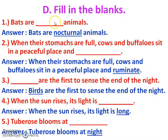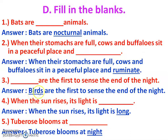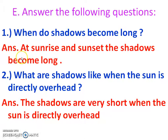Section D: Fill in the blanks. Question 1: Bats are _____ animals. Answer: Bats are nocturnal animals. Question 2: When their stomachs are full, cows and buffaloes sit in a peaceful place and _____. Answer: They do rumination. Question 3: _____ are the first sign of the end of the night. Answer: Birds. Question 4: When the sun rises its light is _____. Answer: Soft. Question 5: Tuberose blooms at _____. Answer: Night.